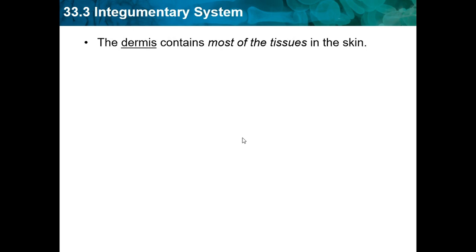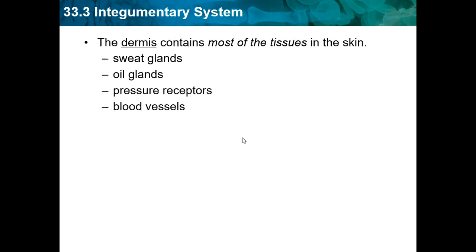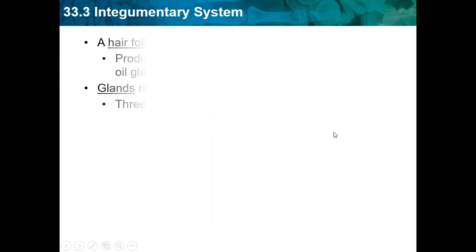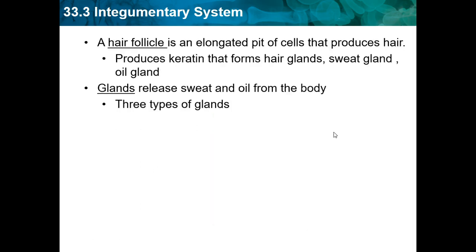The dermis contains most of the tissue in the skin and is important to know. It has sweat glands, oil glands, pressure receptors, blood vessels, and hair follicles — it sits right under the epidermis. A hair follicle is an elongated pit of cells that produces hair, and it produces keratin that forms hair.